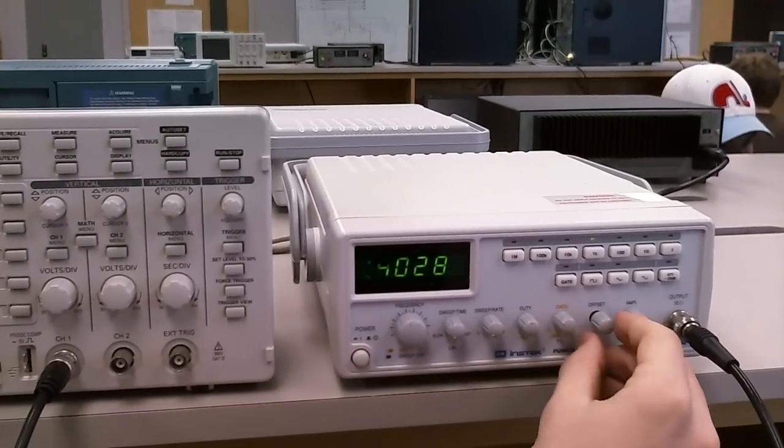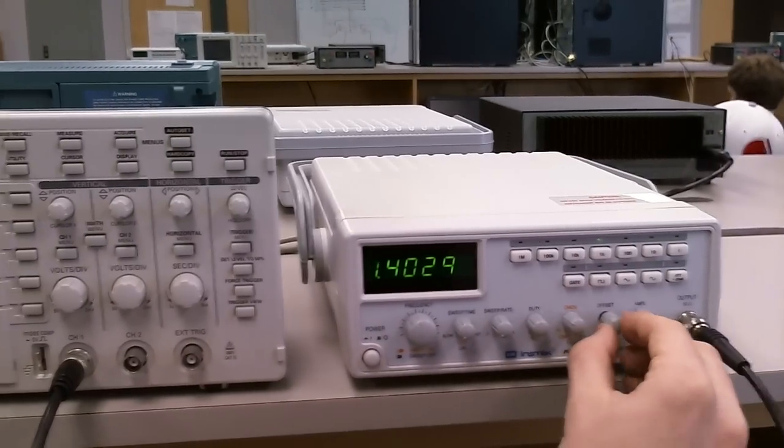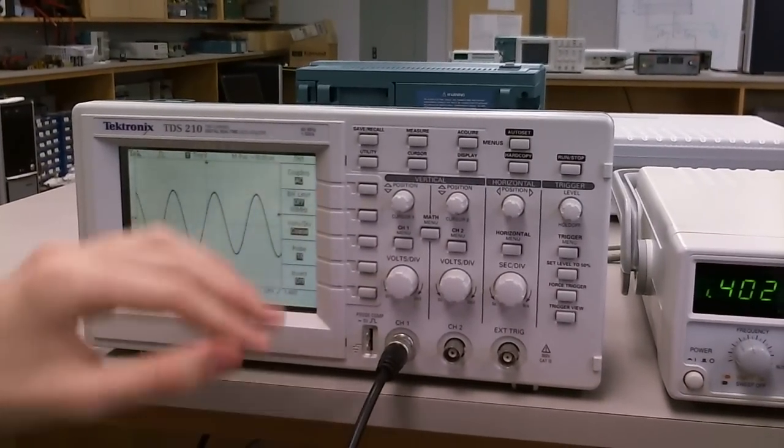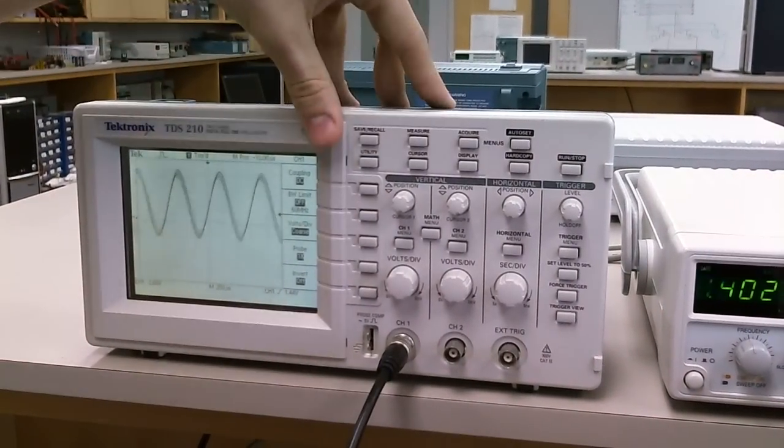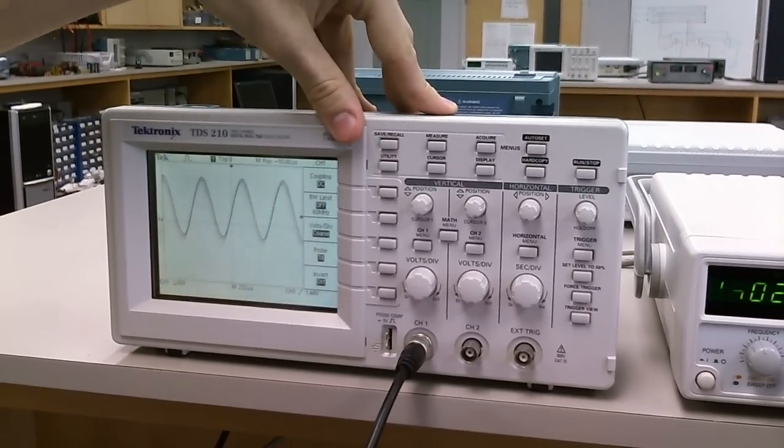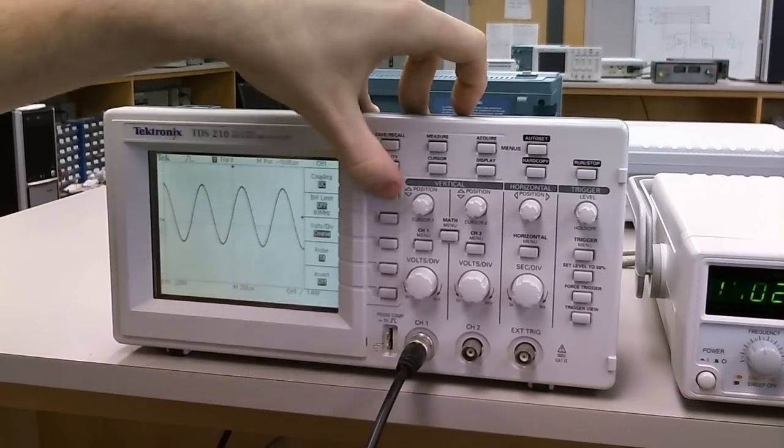And as you can see, if I turn the offset back and forth, the wave stays in the middle. And if I go back to DC and I move it back and forth, you can see the wave moves up and down as it should with DC offset.